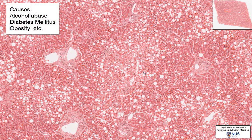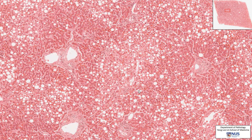We can see this in alcohol abuse, because alcohol affects the metabolism of lipids. We can also see this in obesity as well as diabetes and other conditions. So in order for you to understand why lipid accumulates in the hepatocytes, you have to understand how lipid is metabolized by hepatocytes.